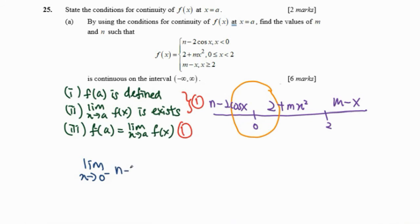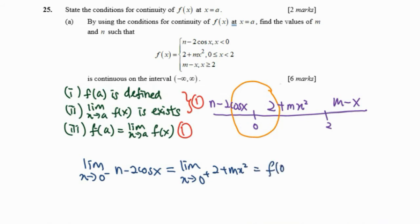At x equals zero, the limit as x approaches zero from the left — function selected is n minus 2cos(x) — must equal the limit from the right — function selected is 2 plus mx squared — and both must equal f(0). Substituting zero, cos(0) equals one, so we get n minus 2 equals 2.